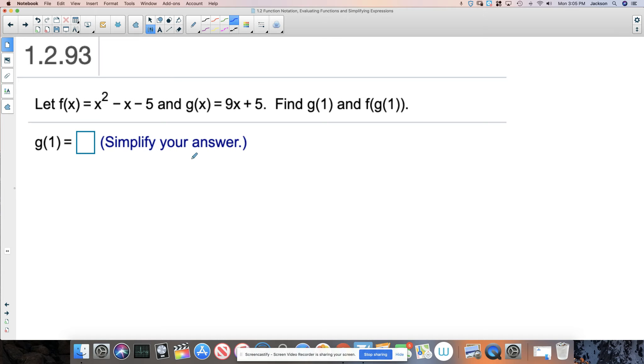Okay, let's look at a slightly more complicated example of how to evaluate functions. So they're giving you two functions now. They're giving you the function f that is defined as squaring x, subtracting x, and subtracting 5. And they're giving you a separate function, which they're calling g, that multiplies x by 9 and adds 5.